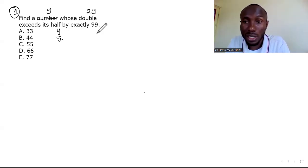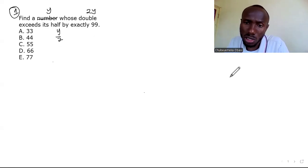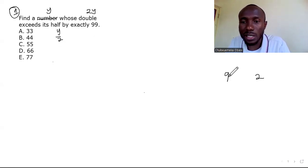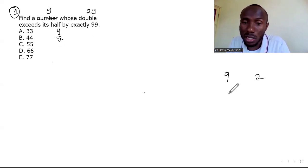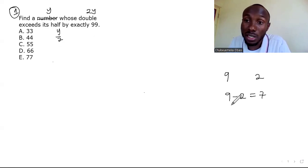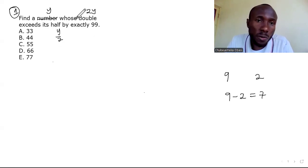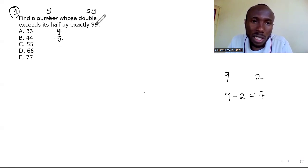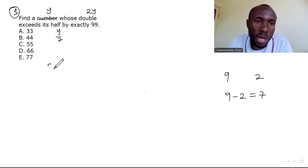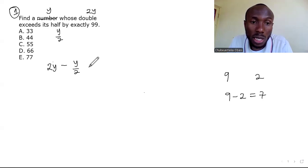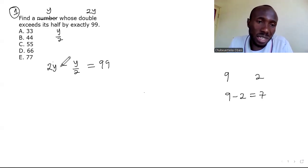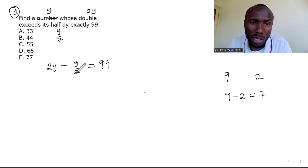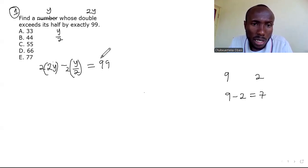Let me explain with a different concept. Look at 9 and 2 — 9 exceeds 2 by exactly 7, meaning when you take away 2 from 9 you get 7. Similarly, if 2y exceeds y/2 by exactly 99, then 2y minus y/2 equals 99. To get rid of the fraction, multiply both sides by 2.